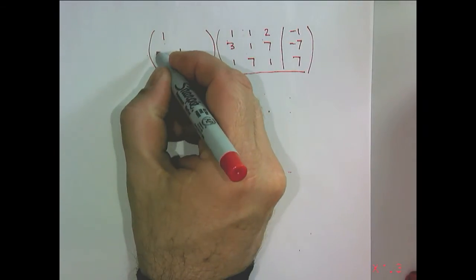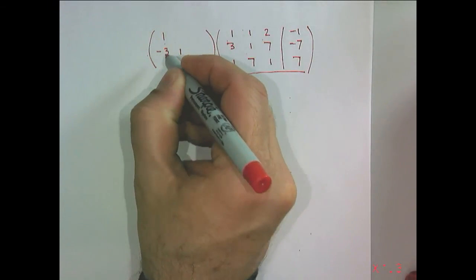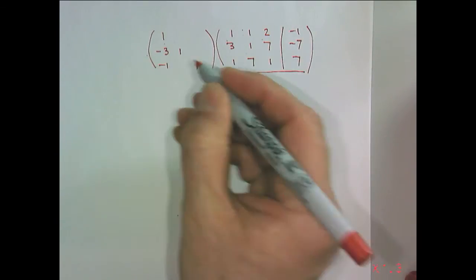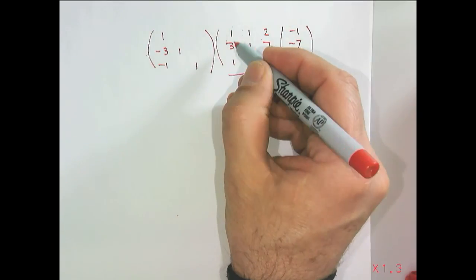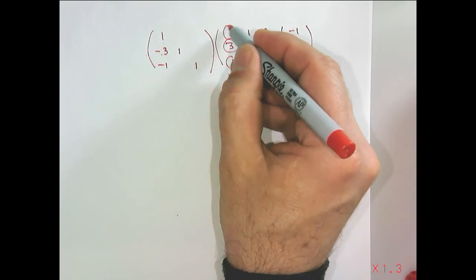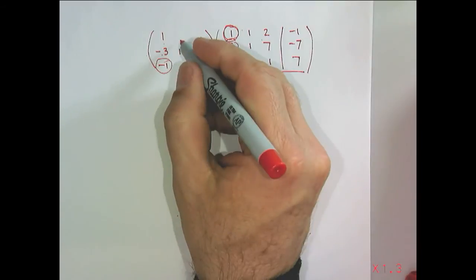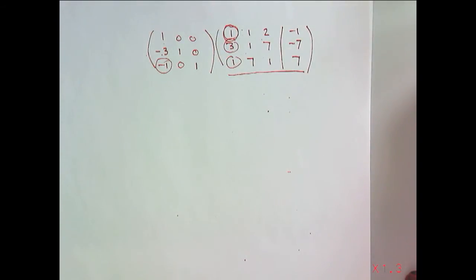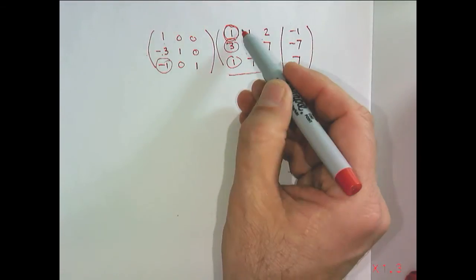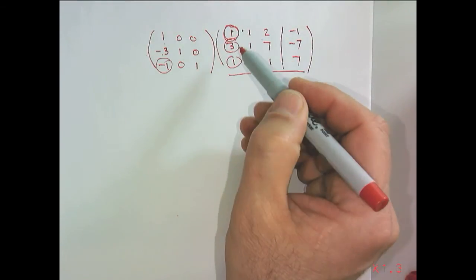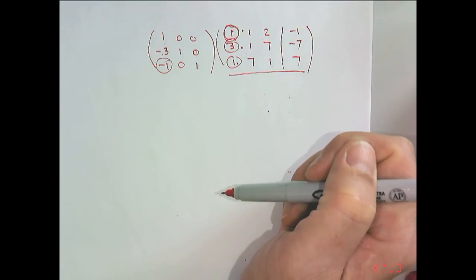However, if instead you put the negative of the multipliers in the first column below the 1, the negative 3 comes from 3 divided by that negated, and then 1 divided by that negated, and everything else is zeros, then we have learned that this particular matrix will take 3 times the first row subtracted off the second row, and 1 times the first row and subtracted off of the last row.